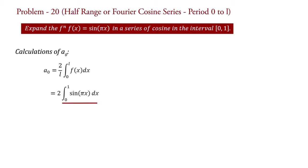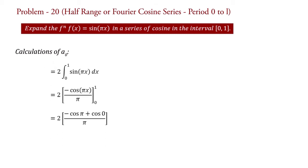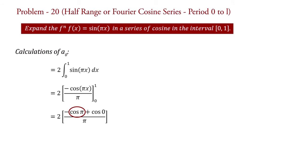Integration of sin(πx) is minus cos(πx) upon π. Therefore, a0 equal to 2 into minus cos(πx) upon π, with limit 0 to 1. Putting in the values of limits: a0 equal to 2 into minus cos(π) plus cos(0), all upon π. Since cos(π) equals minus 1 and cos(0) equals 1, we get a0 equal to 2 into minus of minus 1 plus 1 upon π, which equals 4 upon π. This is the value of coefficient a0.